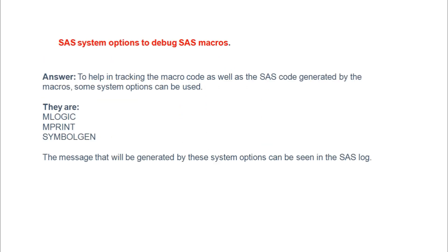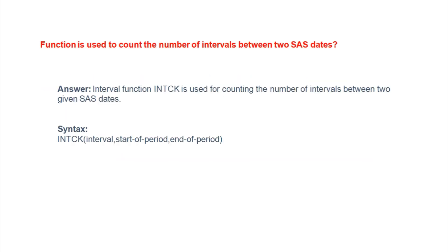The eighteenth question: what are the system options to debug SAS macros? When using SAS procedures you may get errors, warnings, or complications in macros. To debug, use options like MLOGIC, MPRINT, and SYMBOLGEN in the initial step of your SAS macro. Everything is saved and shown in the log — what values were resolved, what errors or warnings occurred — allowing you to resolve issues within the macro.